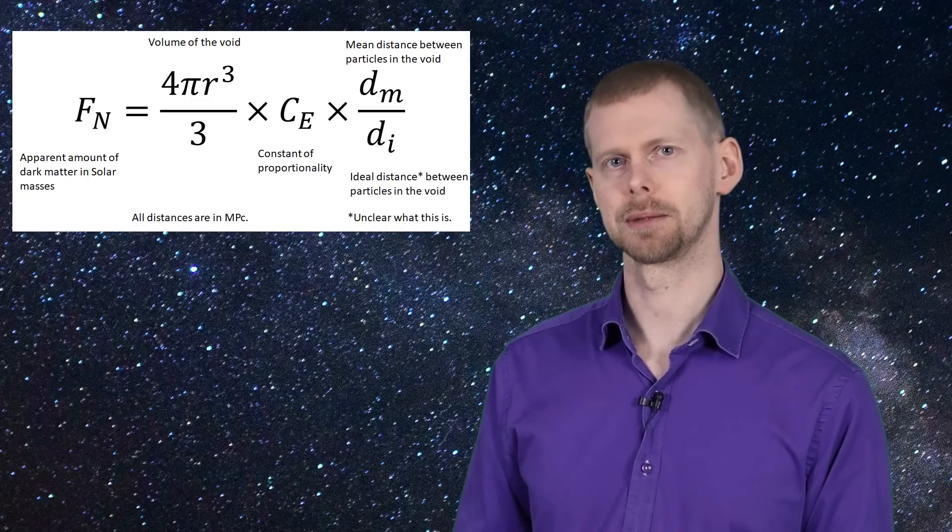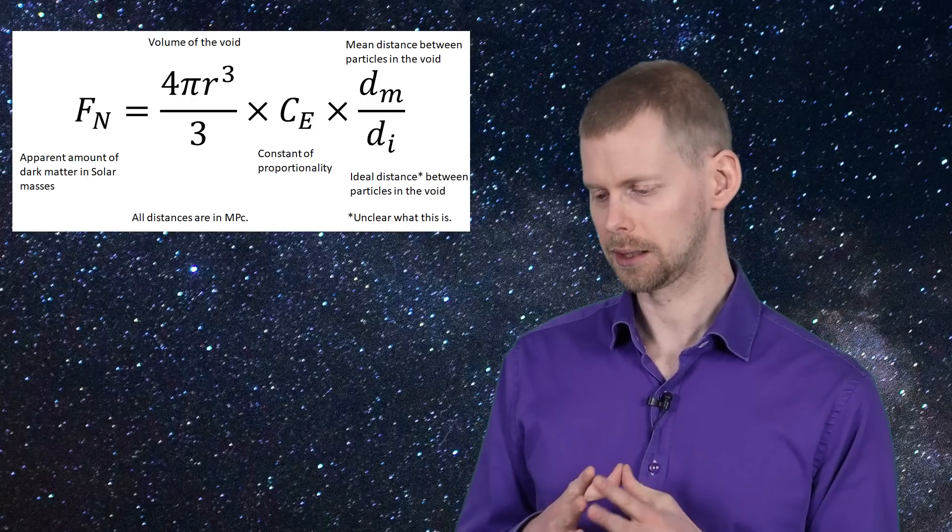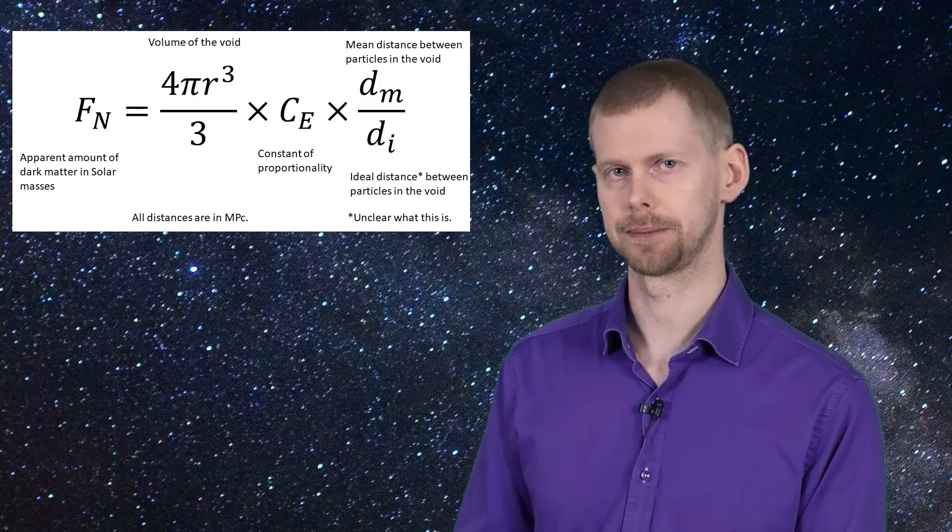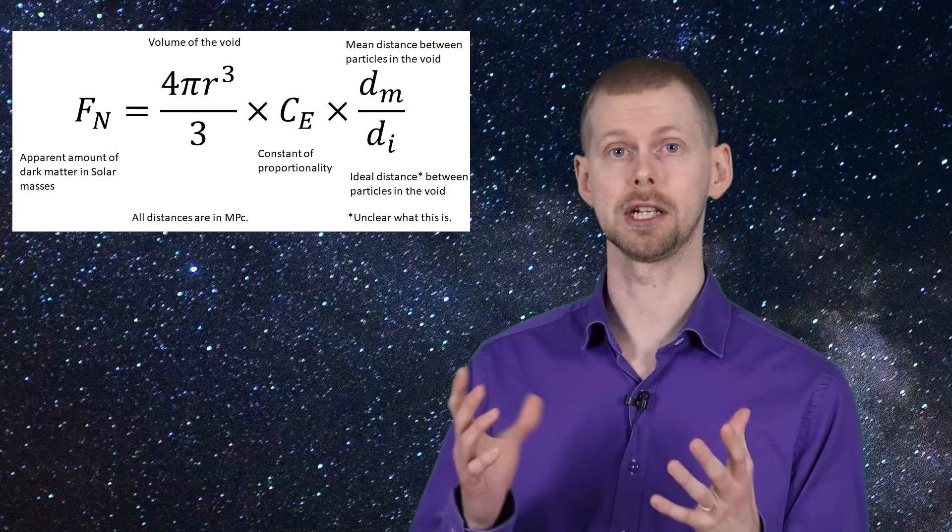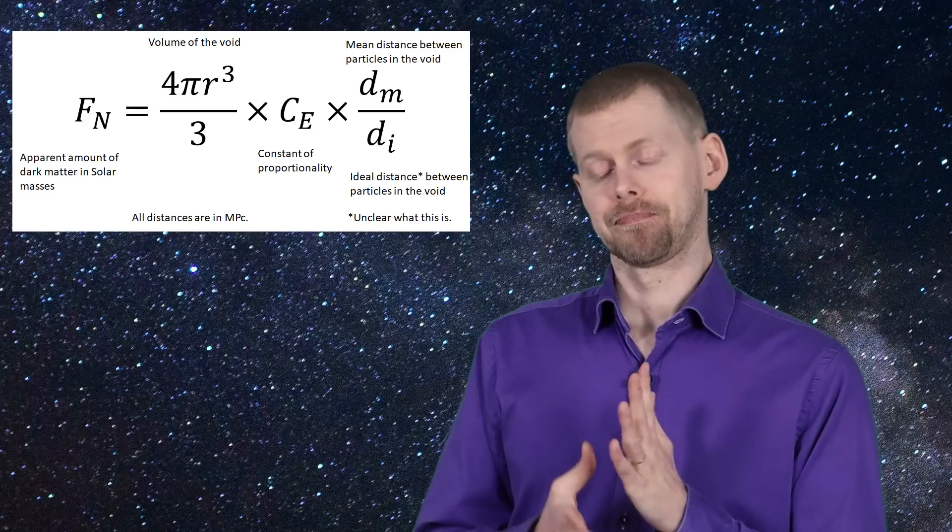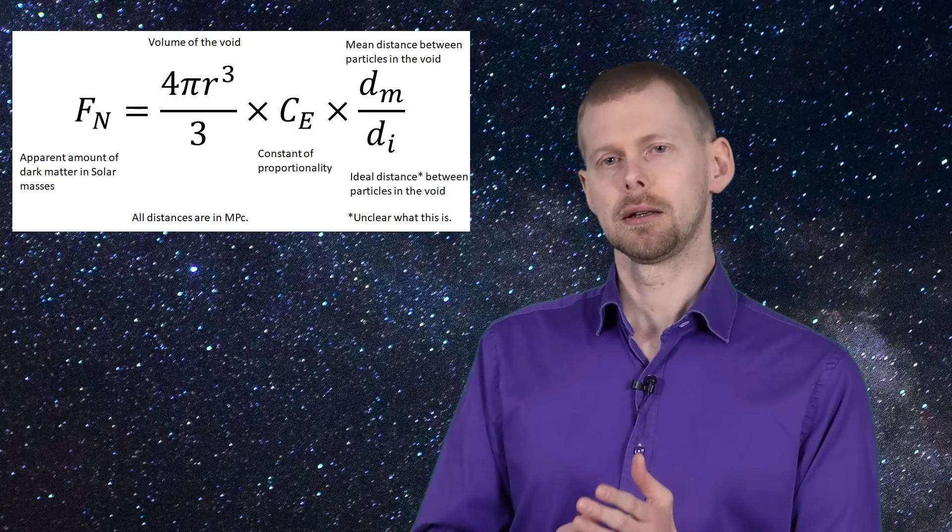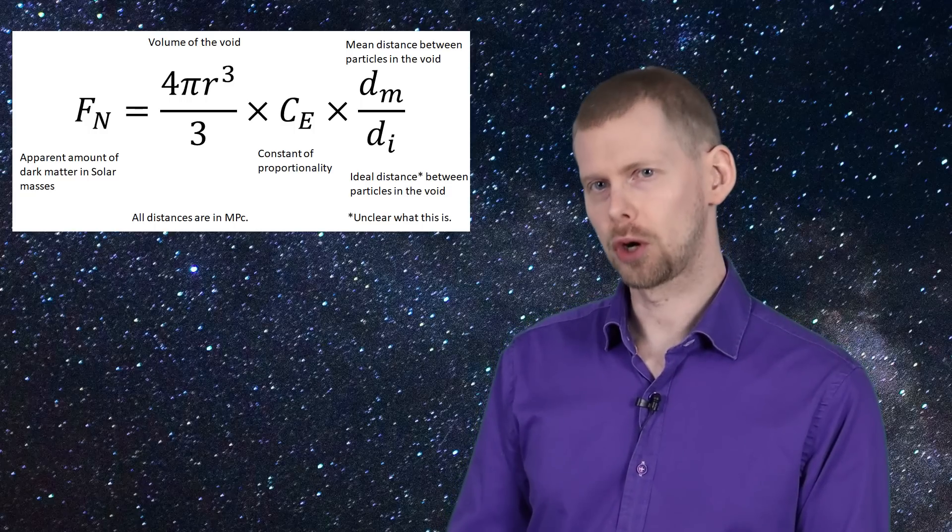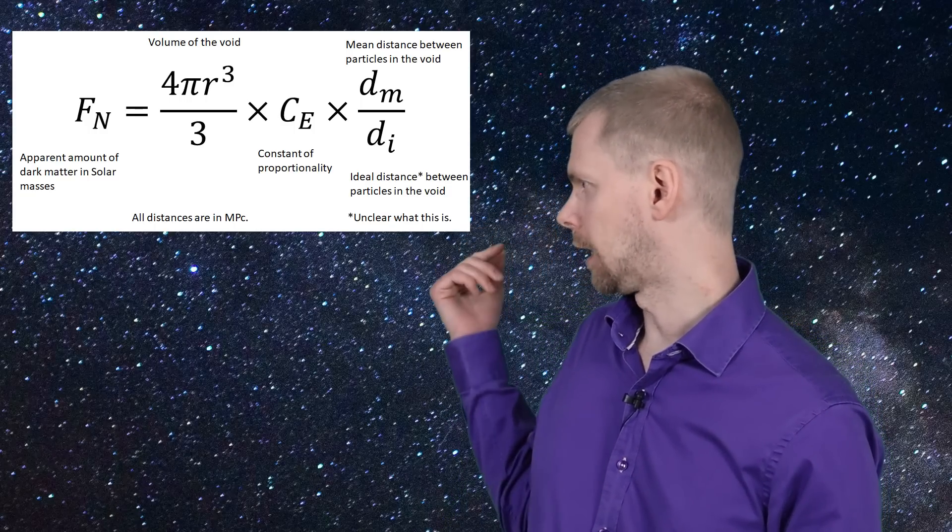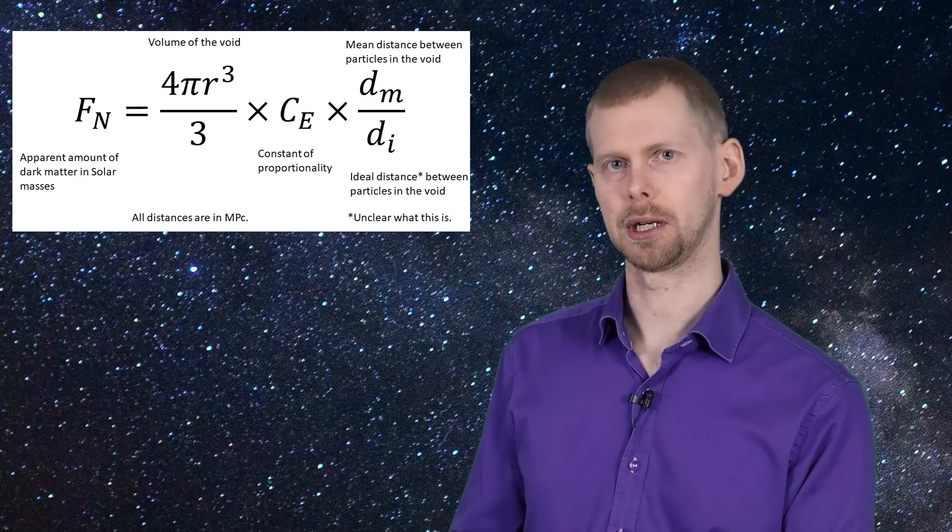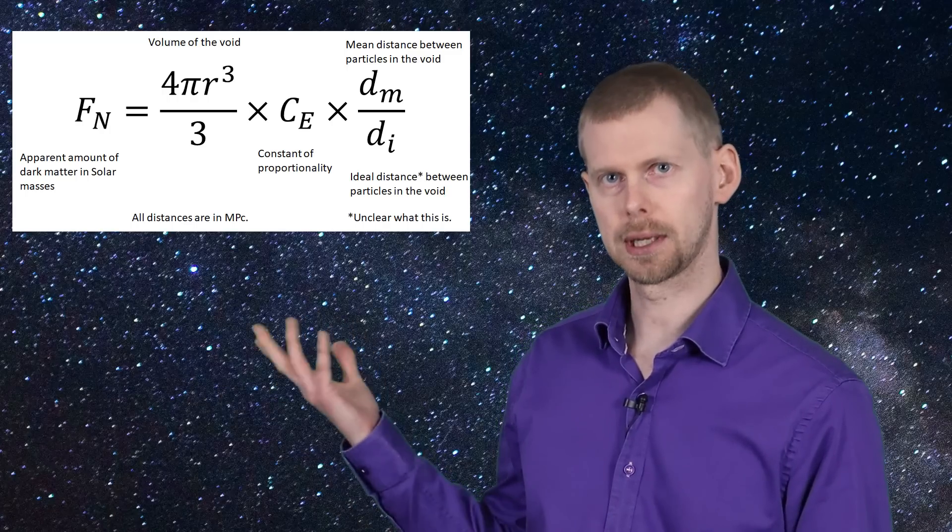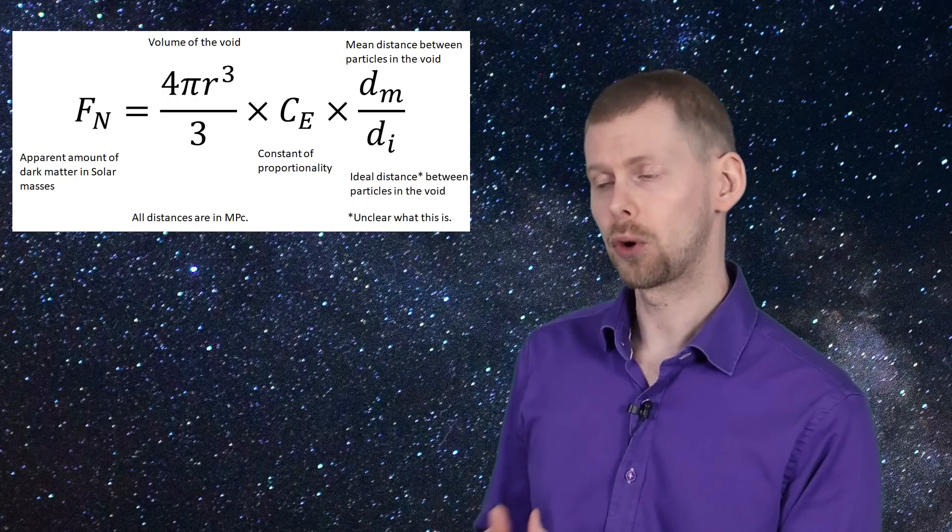This is found by looking at the rotation curves of stars in the galaxy. You then plug in the distance to Andromeda and the M over the I for the void between the Milky Way and Andromeda, and you get that result. That's how you calibrate the constants in this.